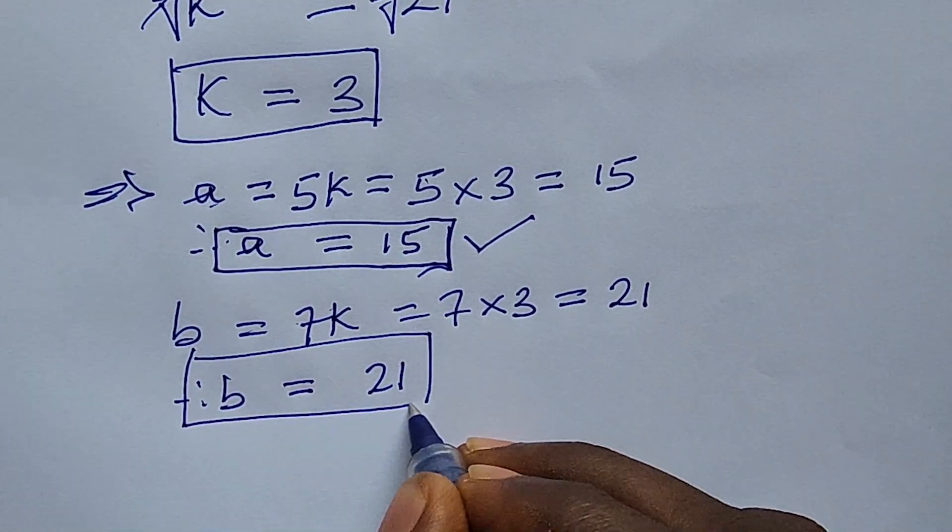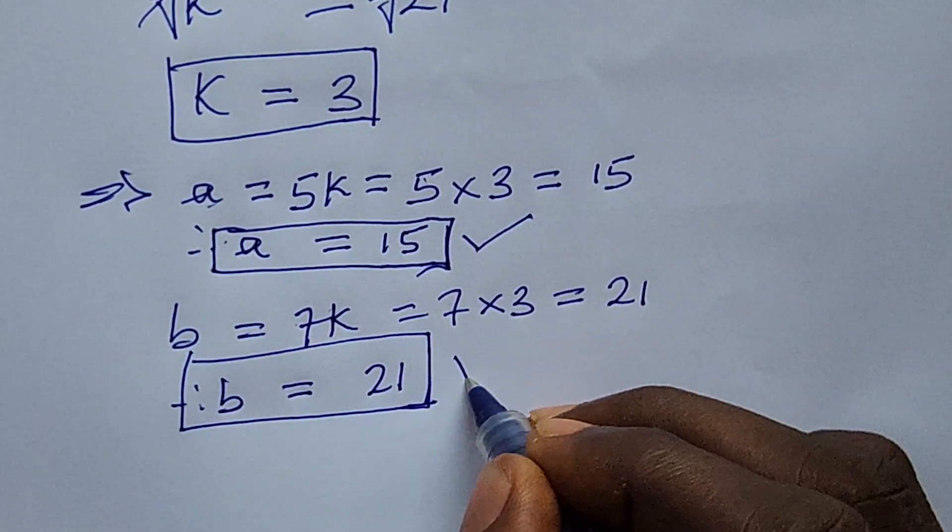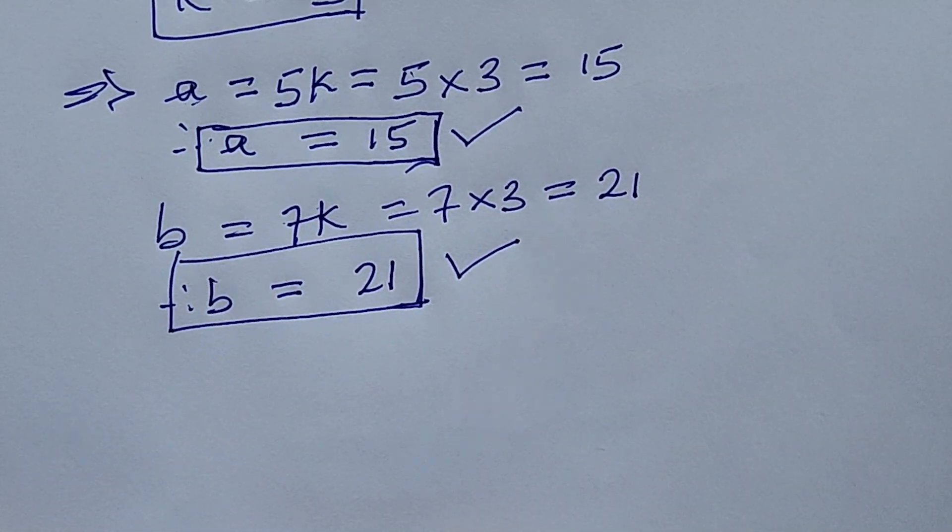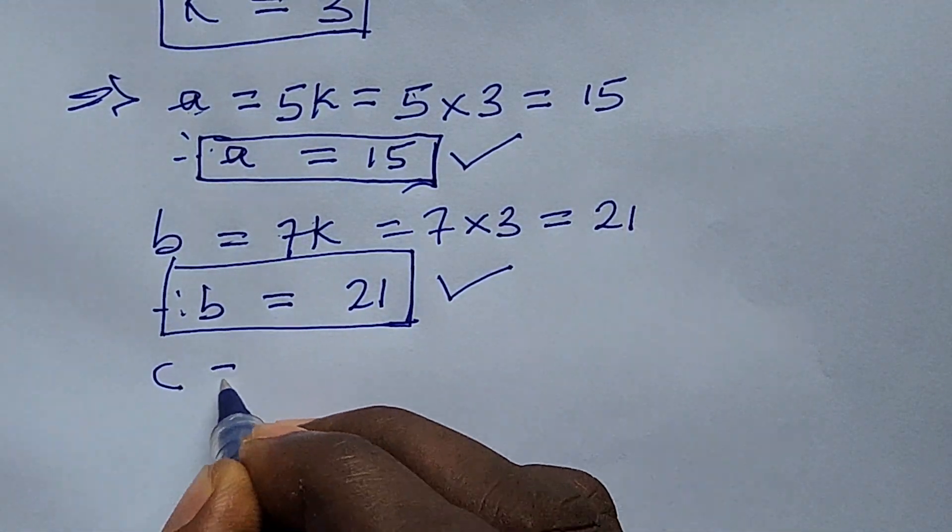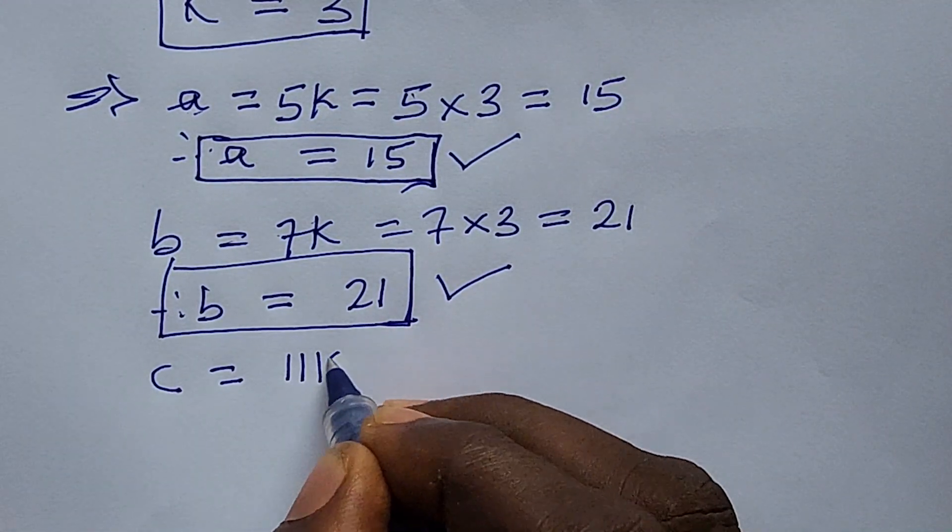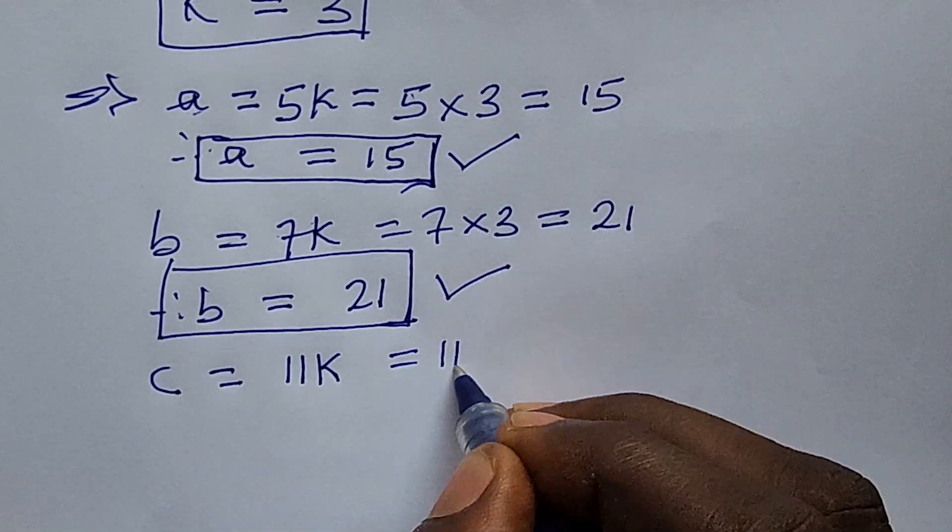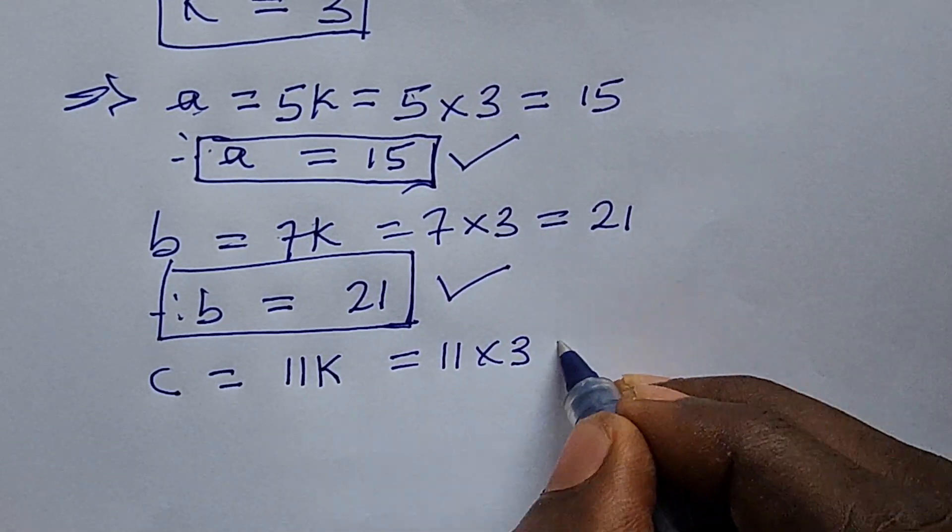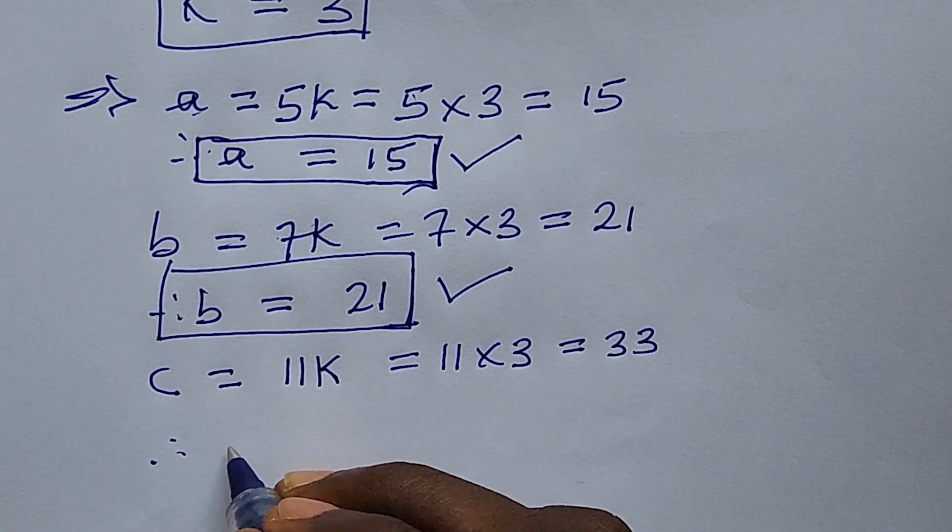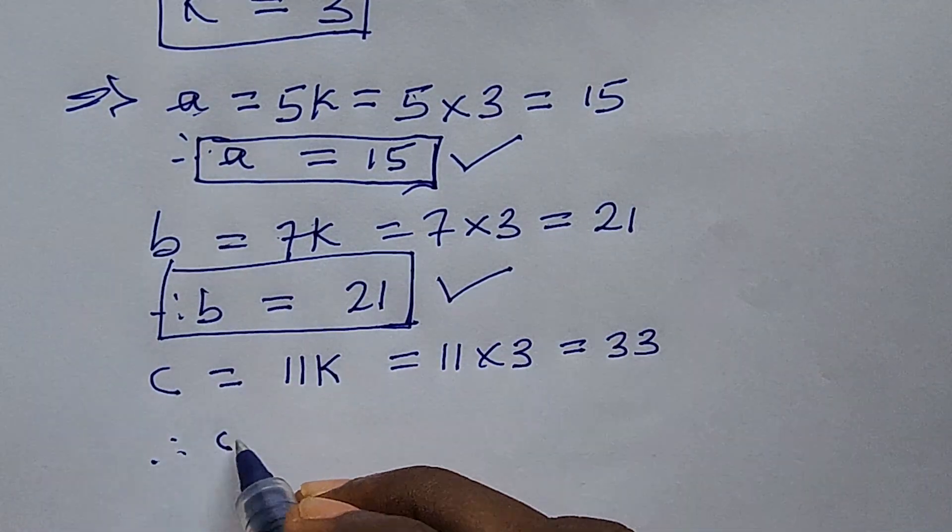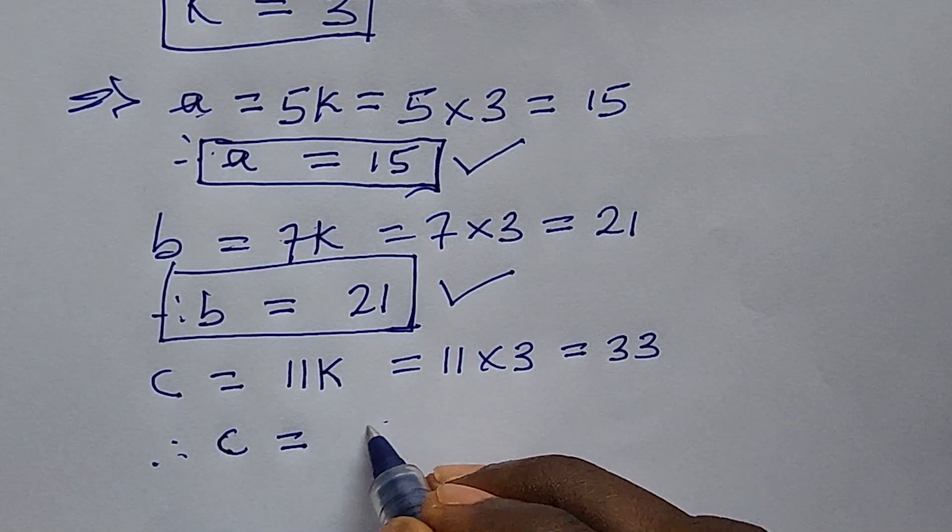Again we've gotten value for the second quantity. Then we go for the third one, which is our c. We know that our c is equal to 11 times k, which is equal to 11 times 3. This will give us 33. Therefore our c is equal to 33.